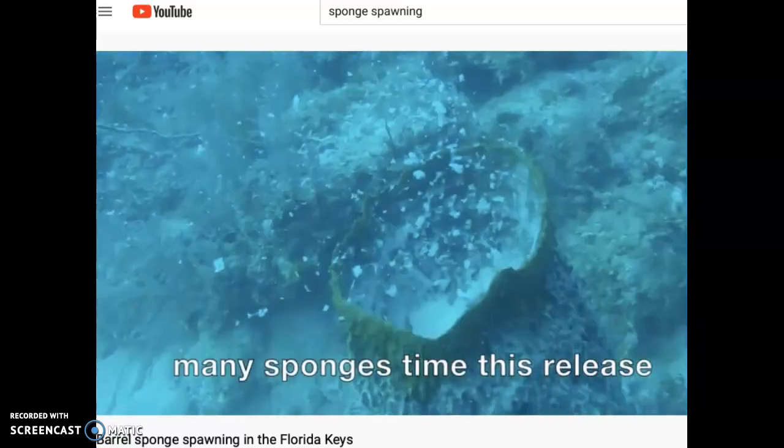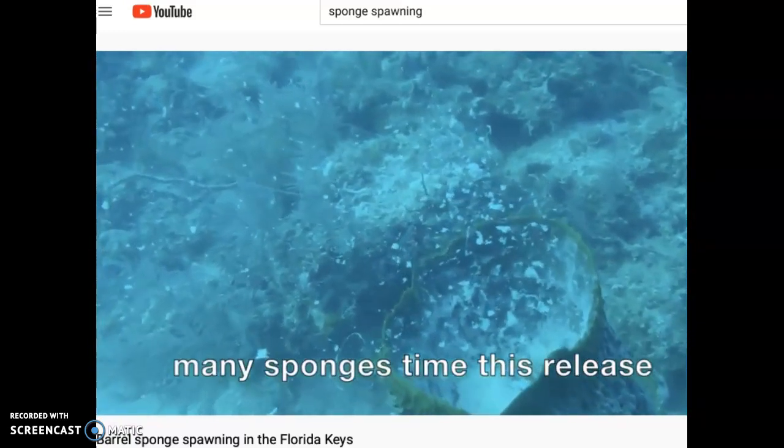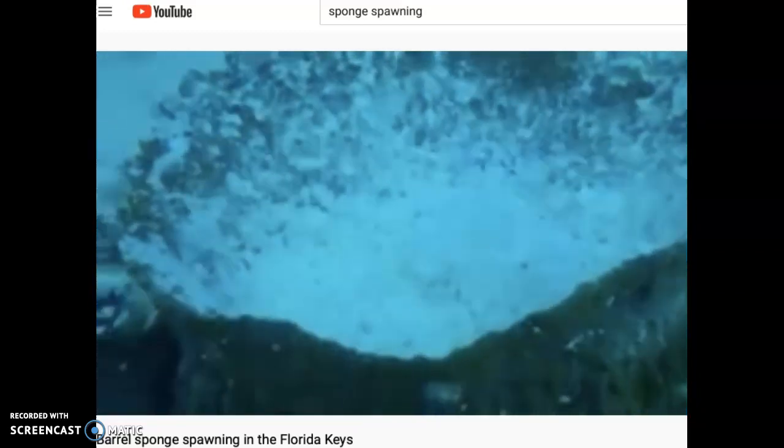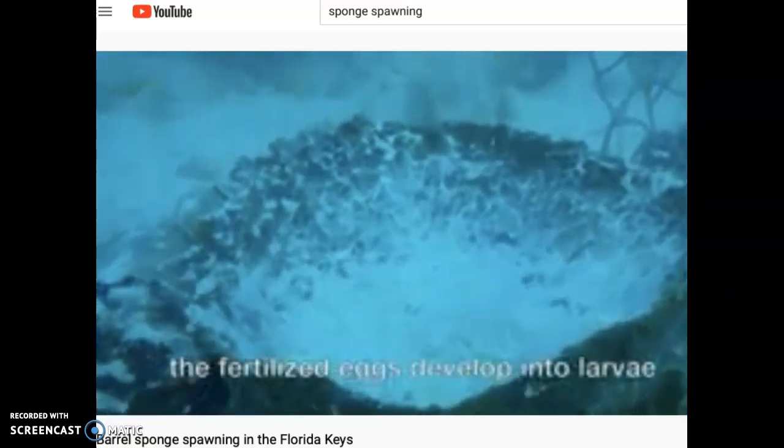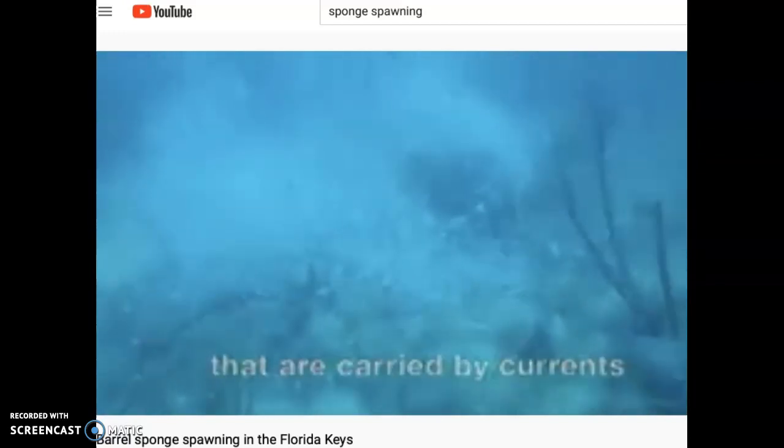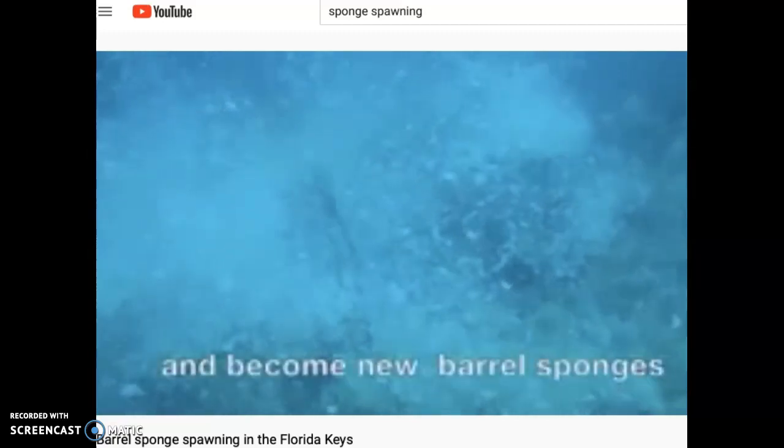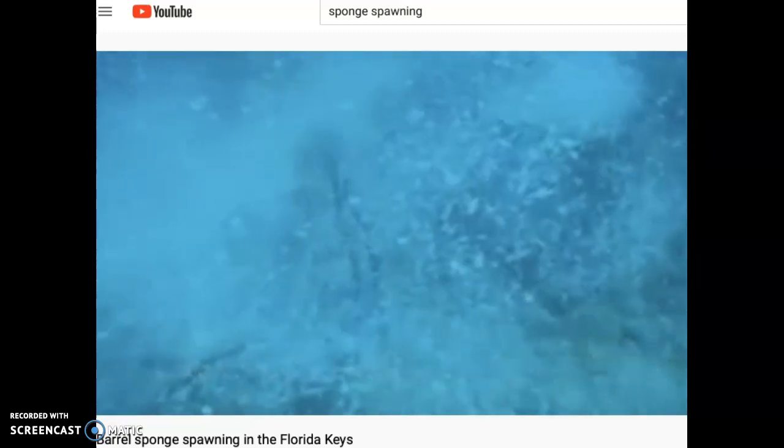Those larger chunks there, those are the eggs. So, you notice in different sponges, in time to release, eggs come out, sperm come out. They get fertilized, they develop into little larvae, and then they move. Usually the ocean current carries them around, but they can do a little swimming.